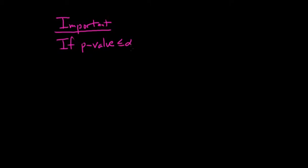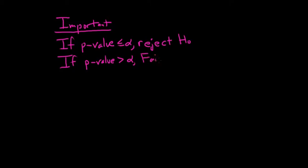Before we do any examples, there's one really important fact. In your hypothesis test, you always have an alpha — that's your level of significance — and you always have a p-value. If your p-value is less than or equal to alpha, you're going to reject the null hypothesis, so you'll reject H0. If the p-value is bigger than alpha, then you're going to fail to reject the null hypothesis, so fail to reject H0.